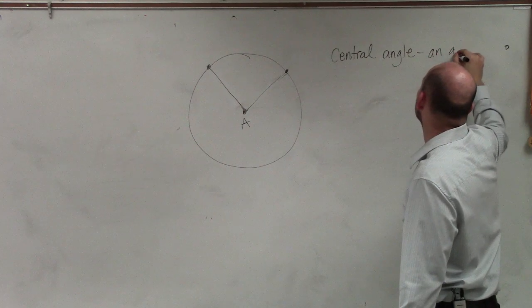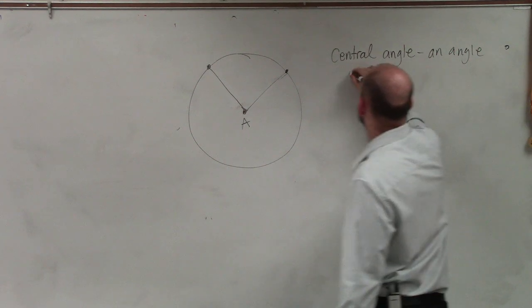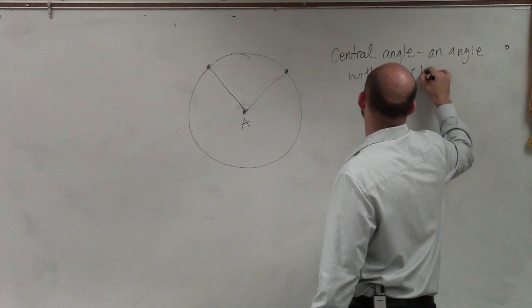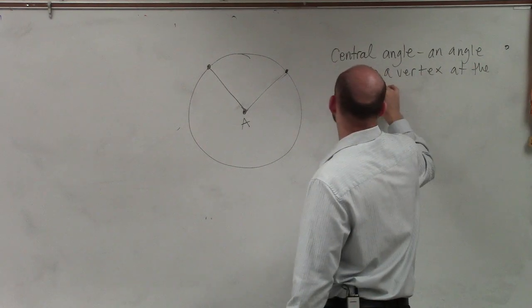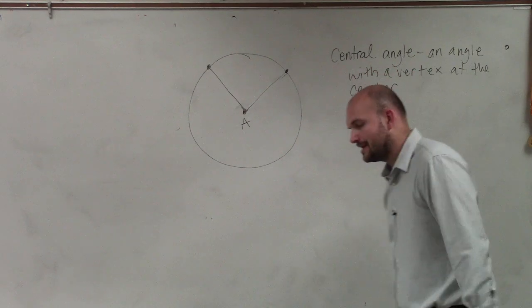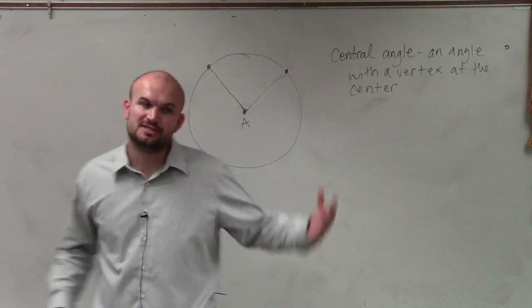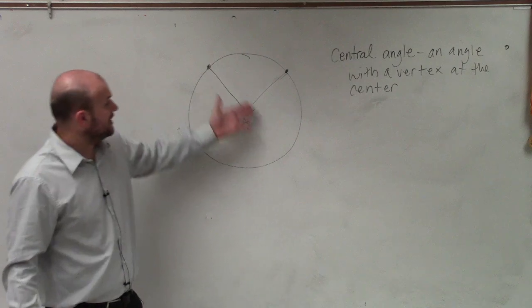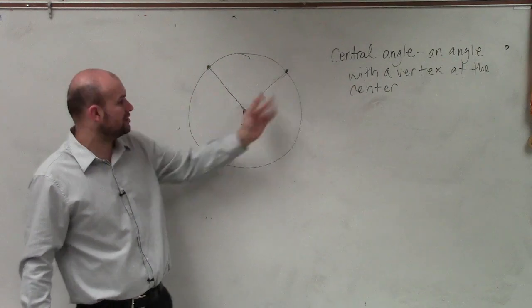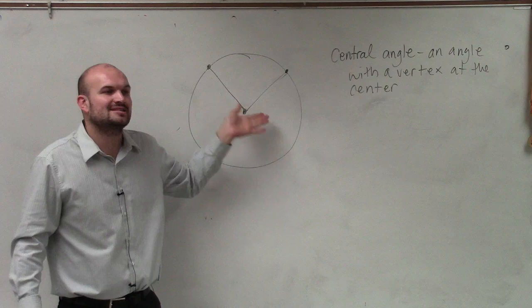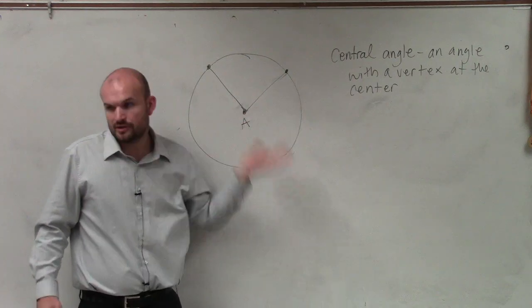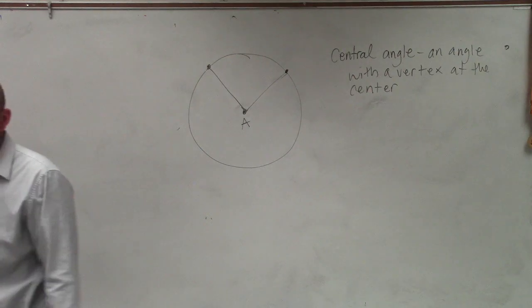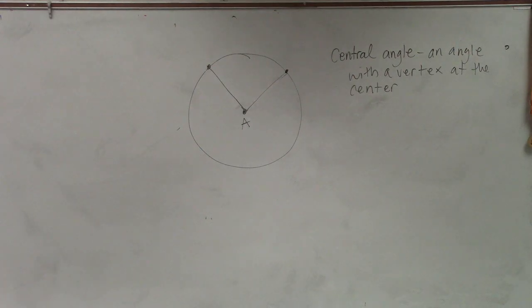So it's just an angle with a vertex at the center. I'll go over more. There's other characteristics. The vertex is at the center. You can see that it goes through two points on your circle, and that the two sides are also radii. They're the radiuses of your circle. I don't want to write all of that, but you guys can obviously see that information. Make sense?